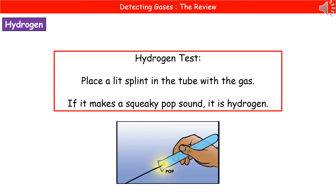The third gas to test for is hydrogen. This could come up in a question linking back to group 1 alkali metals, since alkali metals reacting with water produce hydrogen gas. The test for hydrogen: hold a lit splint in the tube with the gas — it makes a squeaky pop sound. A squeaky pop means it's hydrogen.